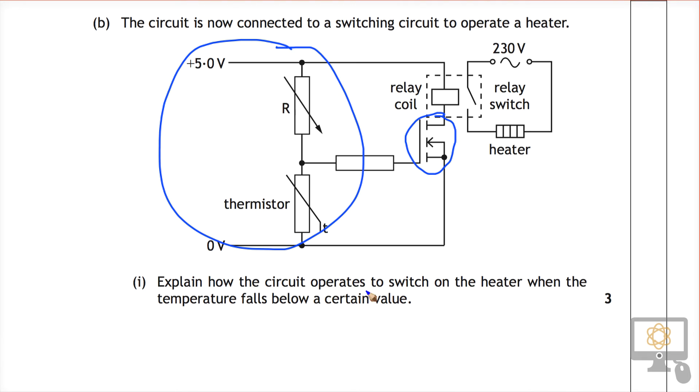So the question states, explain how the circuit operates to switch on the heater when the temperature falls below a certain value. It's worth three marks, and so effectively what we're looking for are three statements.